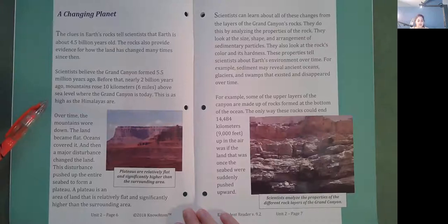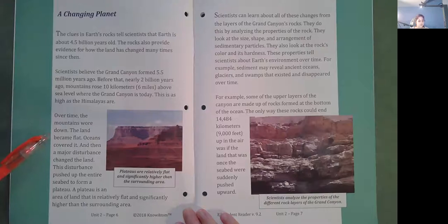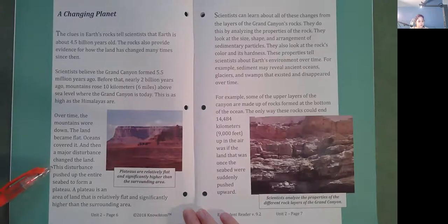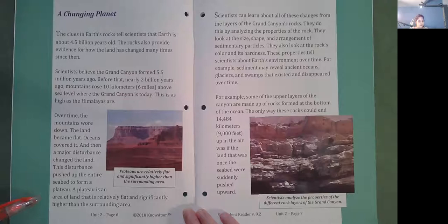This is as high as the Himalayas are. Over time, the mountains wore down. The land became flat. Oceans covered it. And then a major disturbance changed the land. This disturbance pushed up the entire seabed to form a plateau. A plateau is an area of land that is relatively flat and significantly higher than the surrounding area.